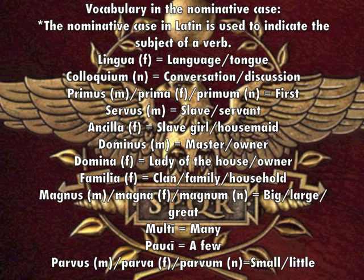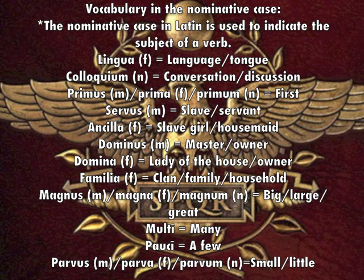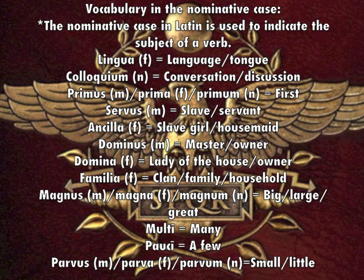Familia — clan, family, or household. Magnus, magna, magnum — big, large, or great.